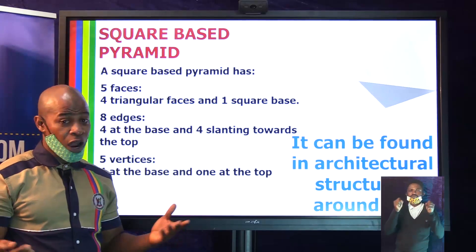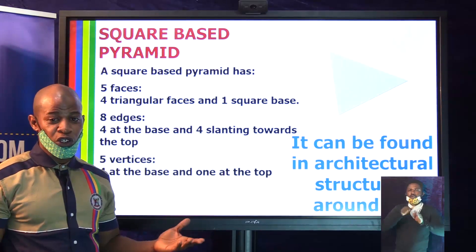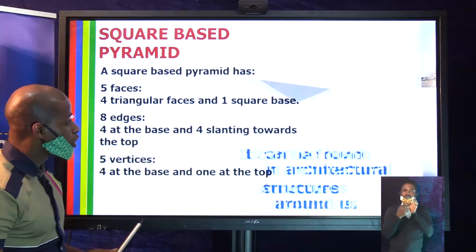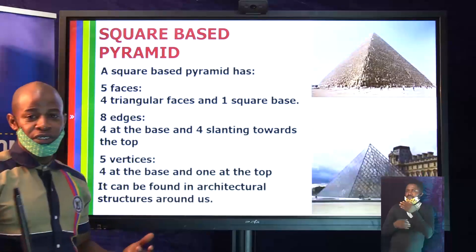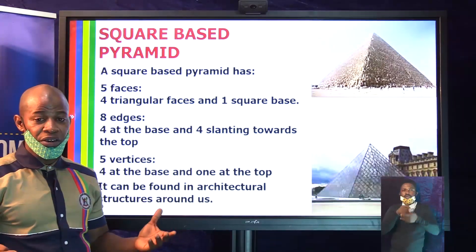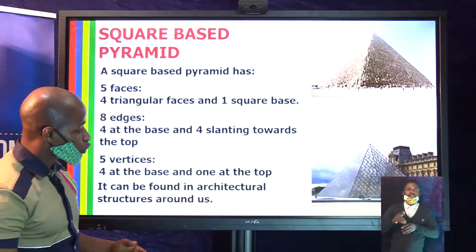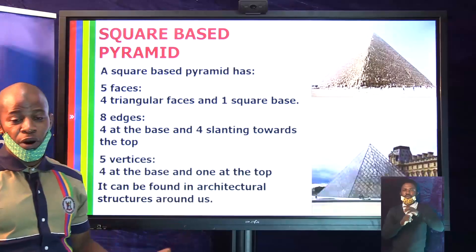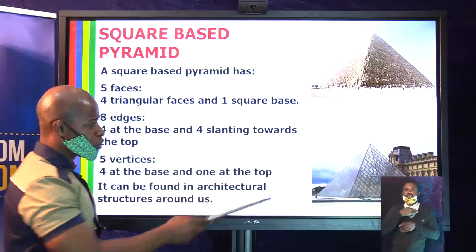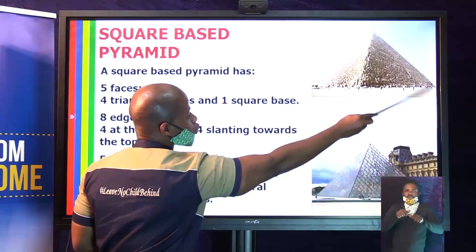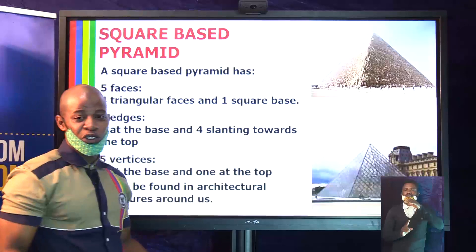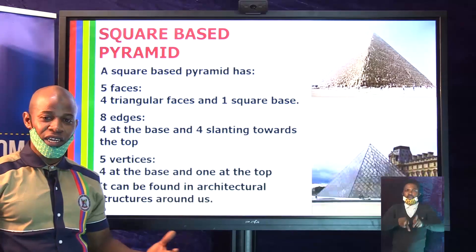Square-based pyramids are all around you. When you go out for excursions, you can see them in architectural buildings. The pyramids in Egypt, where Egyptians buried their late kings, are a famous example. This very famous museum in Paris — the Louvre Museum — is also in the shape of a square-based pyramid. The sharp tip at the top tells you that pyramids are more around us than you think.